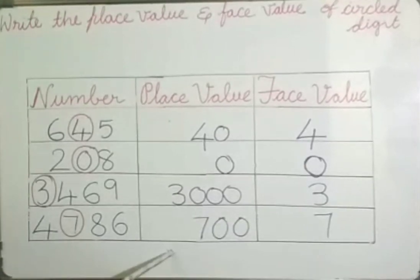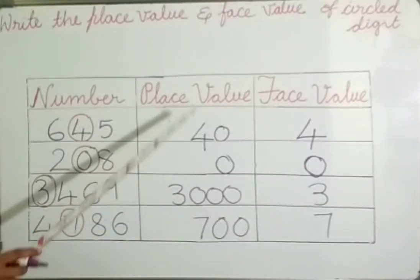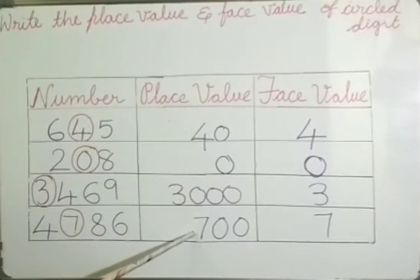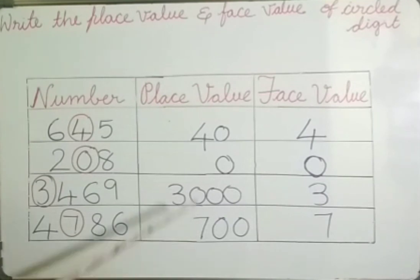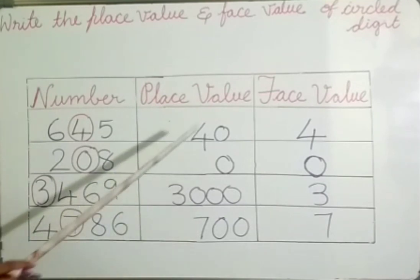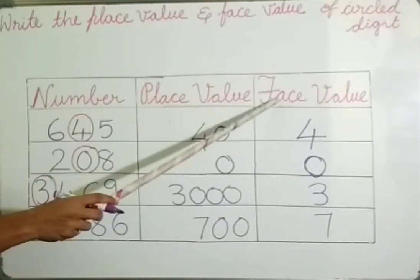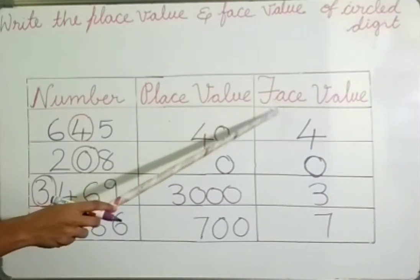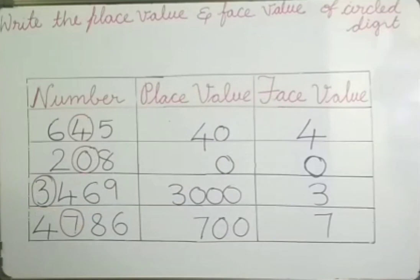So finally, place value depends on the place of the digit in the number, and face value is the digit itself.